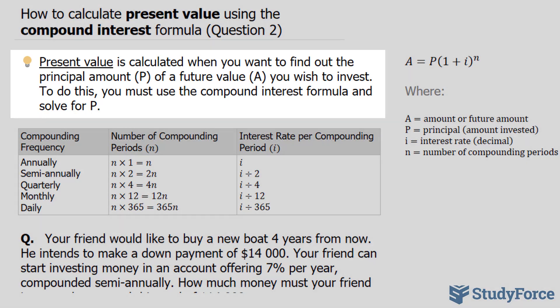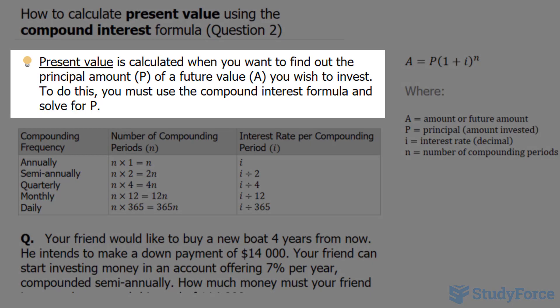This is question 2. Starting off with the definition, present value is calculated when you want to find out the principal amount, P, of a future value, A, you wish to invest. To do this, you must use the compound interest formula and solve for P.